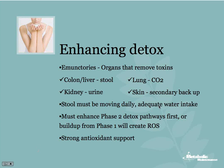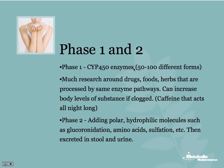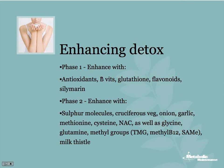Phase 1 creates free radicals that we have to remove. Phase 1 is the cytochrome P450 enzyme — there are over 50 to 100 different CYP450 enzymes. You can go to pubmed.org, type in CYP450 and whatever herb or medicine your patient is taking, and see which enzyme processes it. This is how herb-drug interactions are discovered — they're both processed through the same cytochrome P450 enzyme. To enhance phase 1: antioxidants, B vitamins, glutathione, flavonoids, and milk thistle. For phase 2: sulfur molecules, cruciferous vegetables like cauliflower and broccoli, onion, garlic, and amino acids like methionine, cysteine, NAC, glycine, glutamine, trimethylglycine, methyl B12, SAMe, and milk thistle.